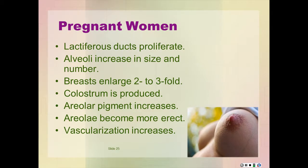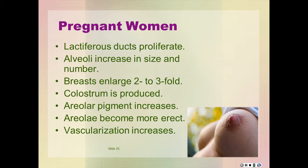Striking changes occur in the breast during pregnancy. In response to luteal and placental hormones, the lactiferous ducts proliferate and the alveoli increase extensively in size and number, which may cause the breast to enlarge two or three times their pre-pregnancy size. The increase in glandular tissue displaces the connective tissue, and the breast becomes softer and looser. Toward the end of pregnancy, as epithelial secretory activity increases, colostrum is produced and accumulates in the acini cells. The areola become more deeply pigmented and their diameter increases. The nipples become more prominent, darker, and more erectile. Montgomery tubercles often develop sebaceous gland hypertrophy.